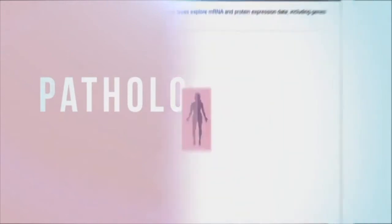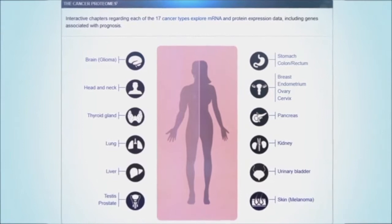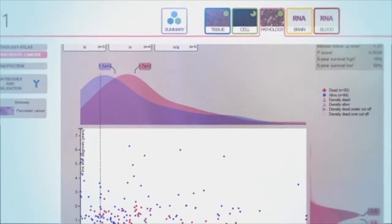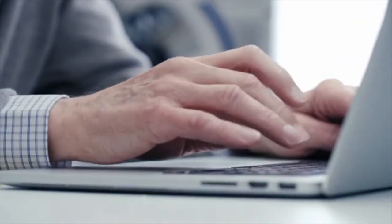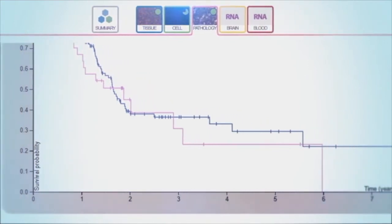The Pathology Atlas shows the effect of protein levels for the survival of patients with different cancers. The results are presented as survival plots, and scientists can explore the relationship between the levels of a particular protein in a tumor with the expected survival of the corresponding patient.